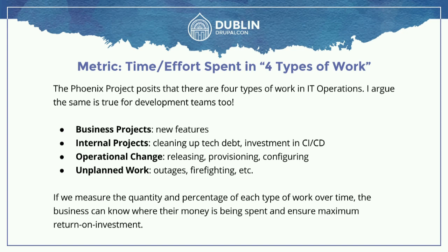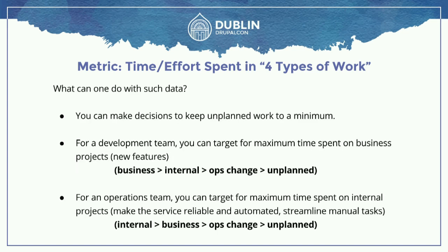So if we actually measure these things — the quantity and the percentage of each type of work over time — and you show it to the business, they are now instantly aware of where their money is being spent and they can see whether they're getting return on investment. What do you do with this data? You can actually track the amount of unplanned work you have and start taking measures to keep it to a minimum so you can focus on the things that actually provide value.